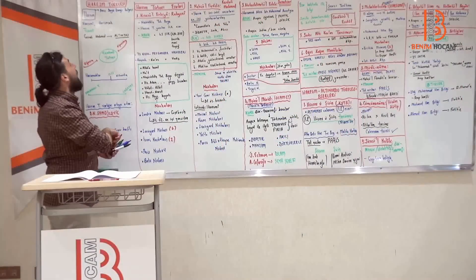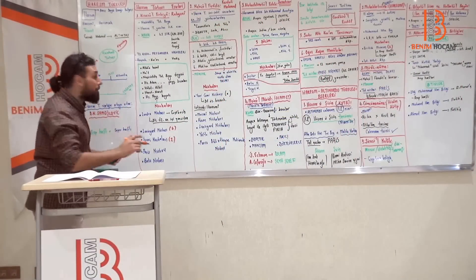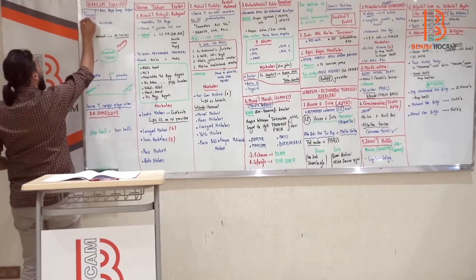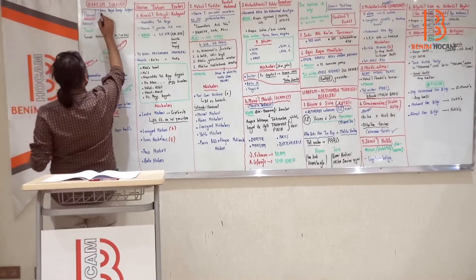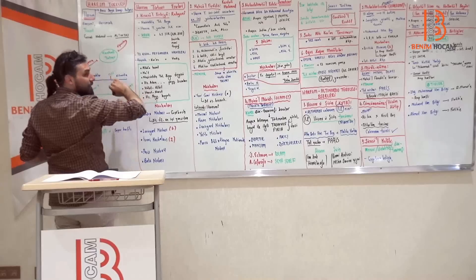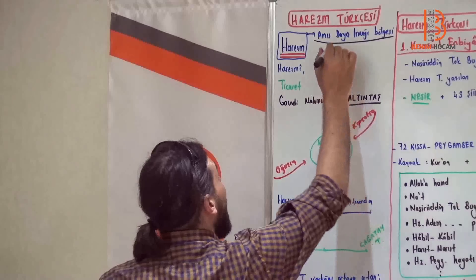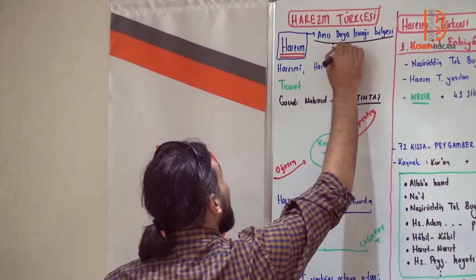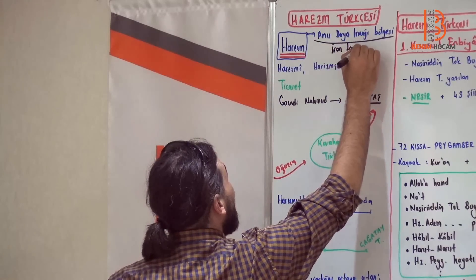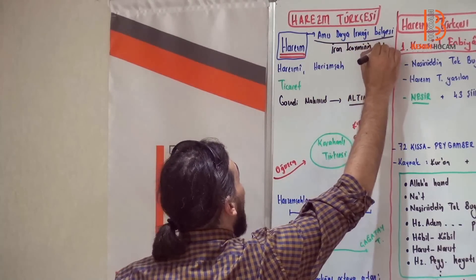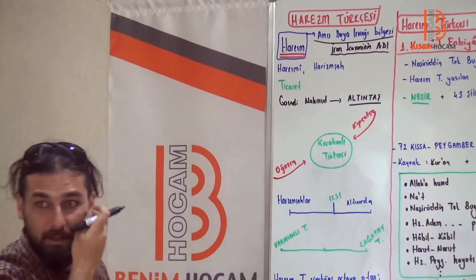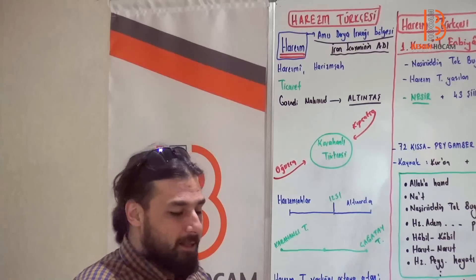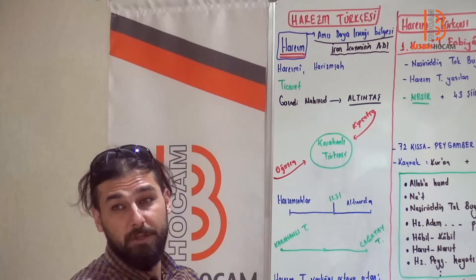Harezm Türkçesi olmuş. Arkadaşlar Harezm Türkçesi'ne şöyle bir bakalım. Önce Harezm'den bahsedelim. Arkadaşlar ilk önce Harezm Amuderya Irmağı bölgesine denir. Ve burada yaşayan İran kavminin adıdır. Yani Harezm'in asıl giriş yeri bir İran kavminin adıdır. Daha sonra o bölgeye arkadaşlar Harezm adı verilmiştir.